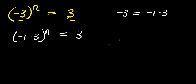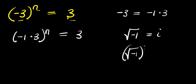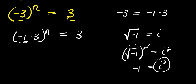Now the next thing is for us to consider this identity. If you have square root of negative 1, this equals i, that is iota. Now if you also take the squares of both sides, the square root will eliminate the square, so you have negative 1 equals i squared. There is negative 1 here, so we are going to replace it with i squared. So we simply have i squared times 3, raised to the power of n, and this equals 3.